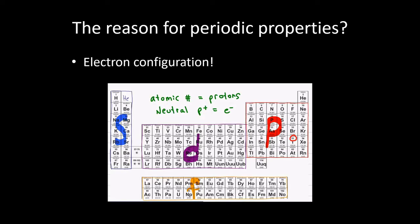Mendeleev actually predicted the existence of germanium, which had not been discovered at that point. He called it eka-silicon at the time because it's down there below silicon. And he predicted, with a decent amount of accuracy, the properties of germanium. So we haven't discussed yet why these properties reoccur — that's what we're going to get into here.